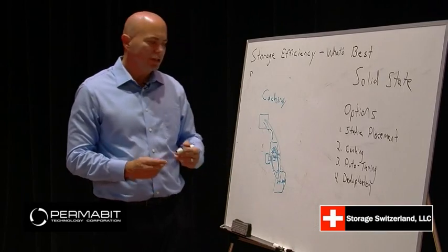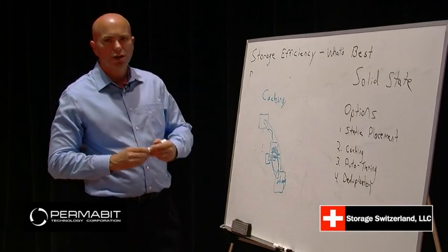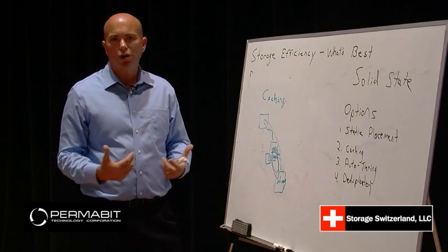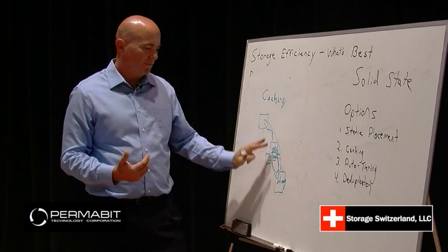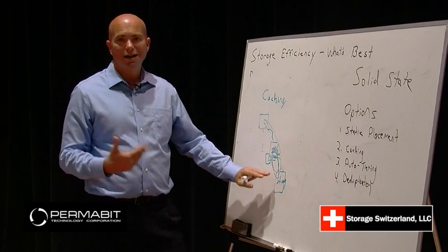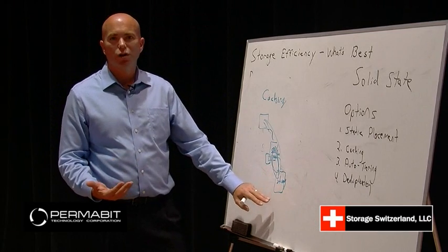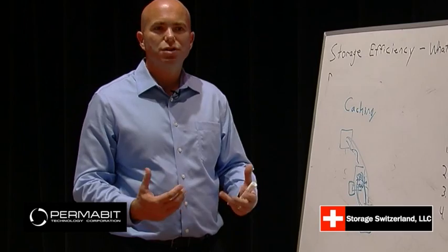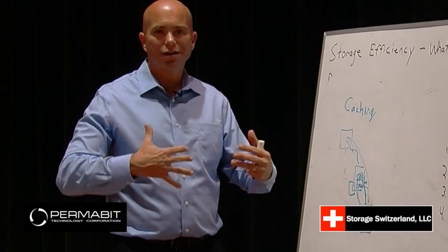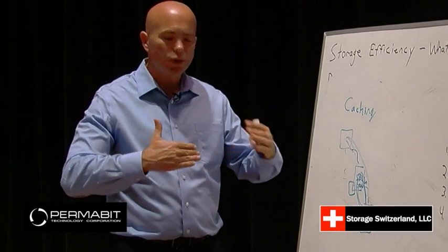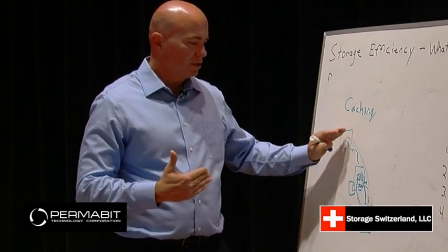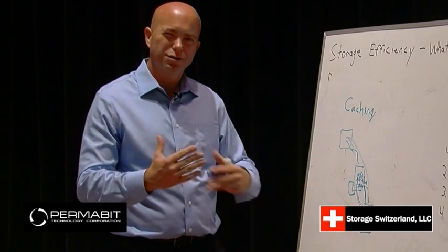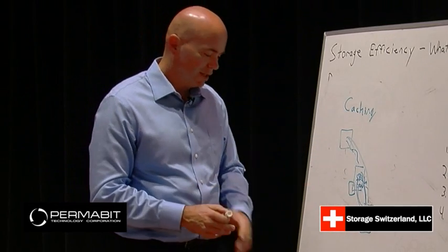The problem with caching is, of course, that you might have what we call a cache miss, where if the data isn't in cache then you still have to go pull it from slow hard disk storage. The other challenge is how it gets in between the storage and the application — that's another bit of a challenge.